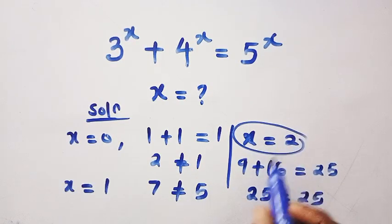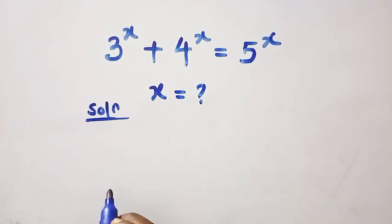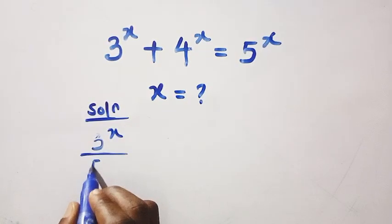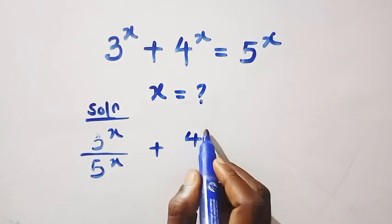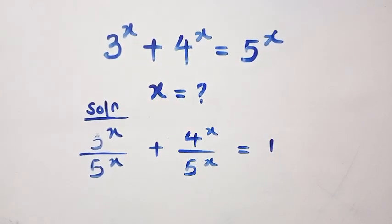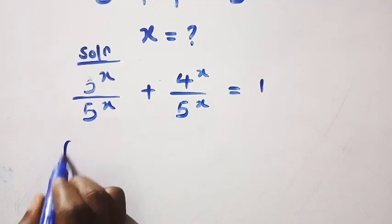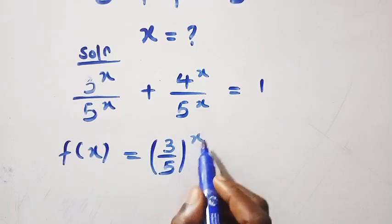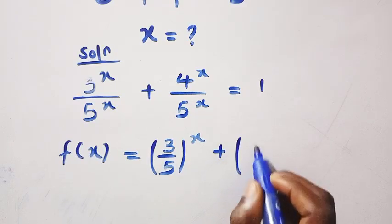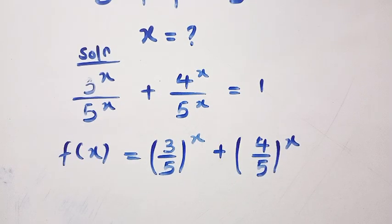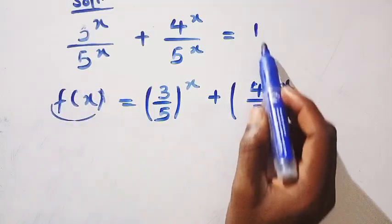But how can we prove that the only solution is 2? Let's divide both sides by 5 to the power of x. We get (3/5)^x plus (4/5)^x equals 1. Let's call this f(x). So f(x) equals (3/5)^x plus (4/5)^x, and f(x) equals 1, where 1 is a constant.